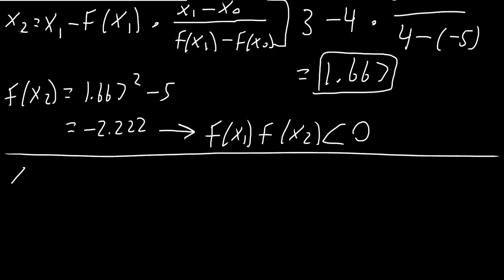So second iteration would be just one more. So 2 becomes 3, 1 becomes 2, and then 0 becomes 1. So x2 minus f(x2), simply this, I'm just adding 1, times x2 minus x1, divided by f(x2) minus f(x1), like this. From here, I plug in the numbers that we got.